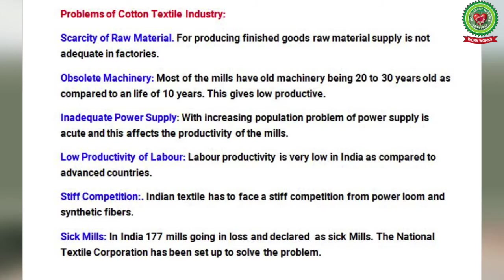Now let's discuss the problems of the cotton textile industry. The first and most important problem is scarcity of raw materials — the raw material supply is not adequate and does not reach factories in time. The second problem is obsolete machinery: most mills have old machinery, being 20 to 30 years old compared to an average life of 10 years in developed countries, resulting in low productivity.